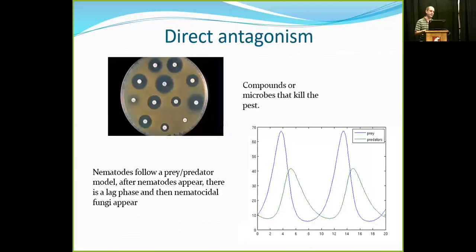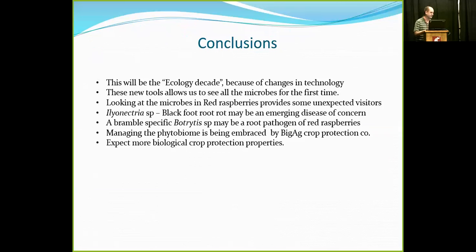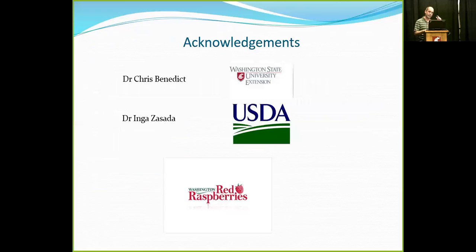So to conclude: this is going to be the ecology decade, mostly because we now have the tools that allow it. Looking at microbes in red raspberries provided some unexpected visitors — Ileonectria, which we need to understand better to determine whether it's an emerging disease or just a semi-friendly presence; and a bramble-specific Botrytis in the roots. We see that managing the phytobiome is being embraced by big ag and will continue to be embraced. We can expect more biological protection products in the future. Thanks to my collaborators Chris Benedict and Dr. Inga Zasada at the USDA, and to the Red Raspberry Commission for funding this work.